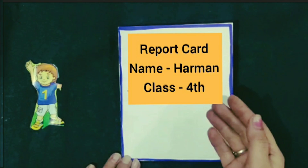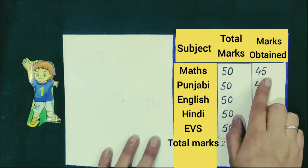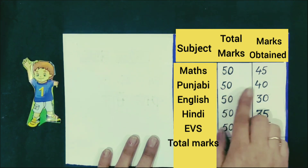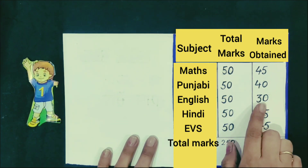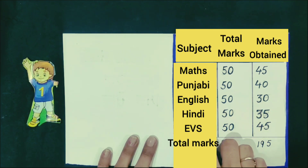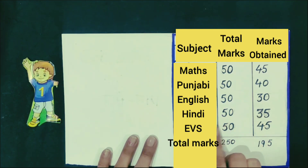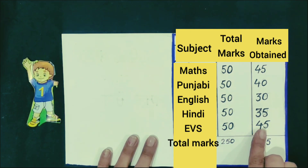Now let's see how many marks did he get in each subject. In Maths, he got 45 marks. In Punjabi, he got 40 marks. In English, he got 30 marks. In Hindi, he got 35 marks. In EBS, he got 45 marks.